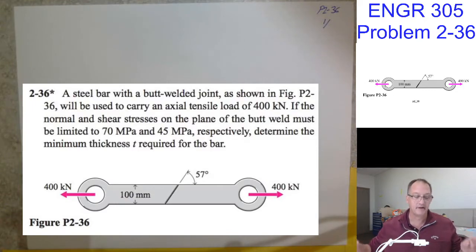All right. Engineering 305, chapter 2, problem 36. Steel bar with a butt welded joint, as shown in the figure, will be used to carry an axial tensile load of 400 kilonewtons. If the normal and shear stresses on the plane of the butt weld must be limited to 70 megapascals and 45 megapascals respectively, determine the minimum thickness T required for the bar.